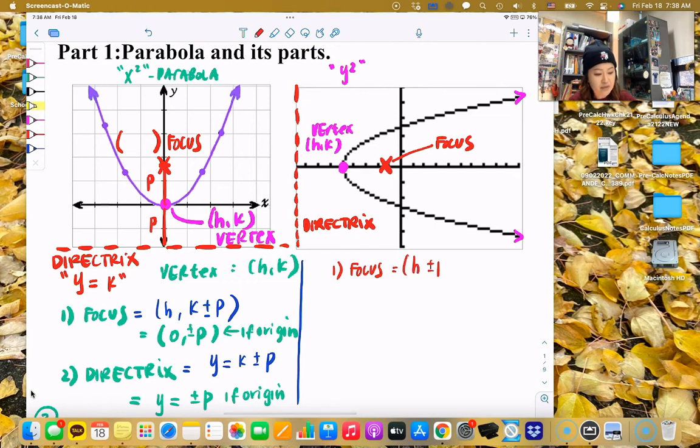So you're going to go h plus or minus p, p amount, right, because this is a p distance. This is also the p distance. And then the k does not change. How about the directrix? I know what you're wondering. You're like, how about the origin? How about the origin? Well, if it's the origin, easy peasy, h plus or negative p, but it's the origin.